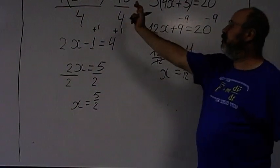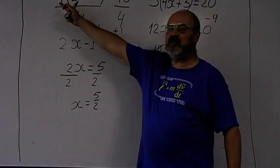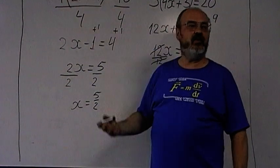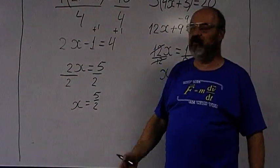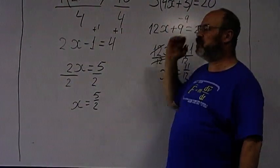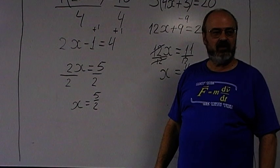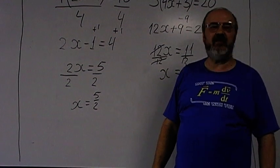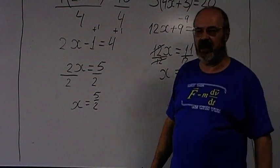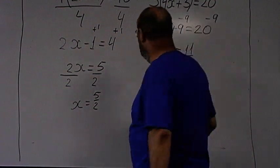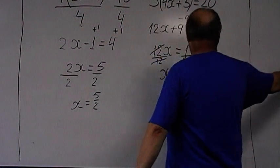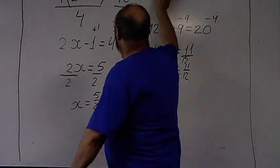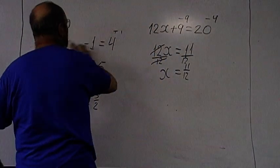Summary: if the number in front of the bracket is divisible into the number on the right, divide first. If not, expand the bracket first. Those are the two cases for one bracket. The third case is when we have more than one bracket.